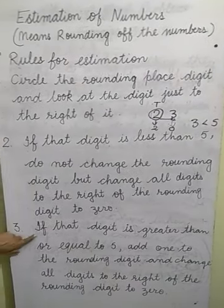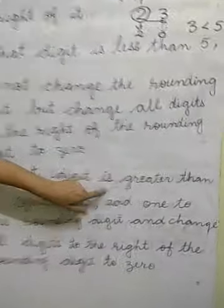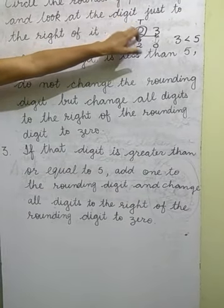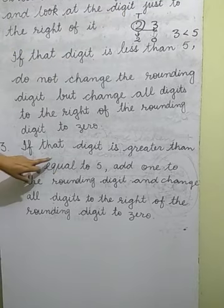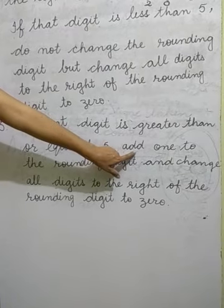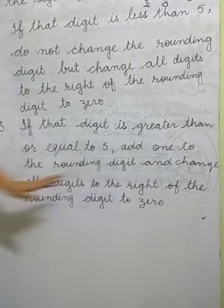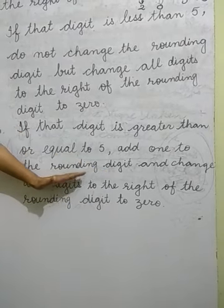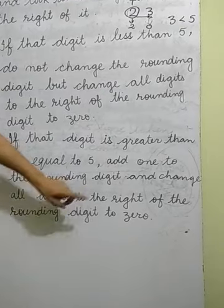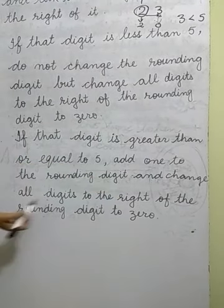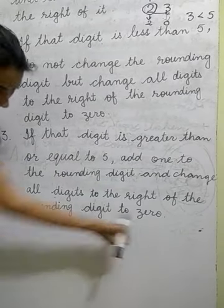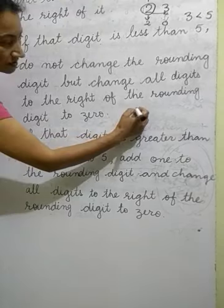Now the third rule: if the digit to the right of the circled rounding digit is greater than or equal to 5, then add 1 to the rounding digit — the digit which we have circled. And change all the digits to the right of the rounding digit to 0.